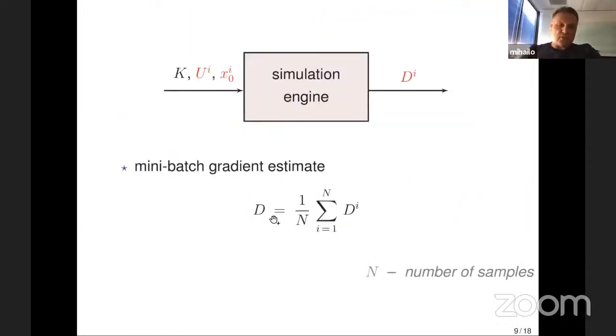In applications, you are not bound to using a single sample. You can use multiple samples by utilizing mini-batch gradient estimate. This would require running multiple simulations. The relevant question becomes how many samples and how many iterations you need for your random search method to emulate properties of gradient descent.